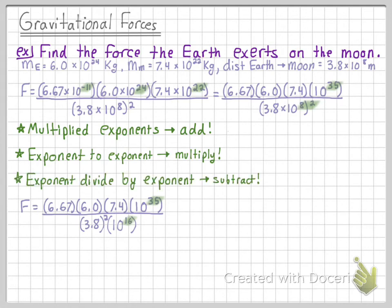Lastly, whenever we have an exponent divided by an exponent, so we have like times 10 to the 35th here divided by times 10 to the 16th, we're going to subtract them. So we get a power of times 10 to the positive 19th, so it goes in the numerator.